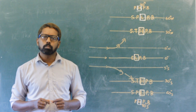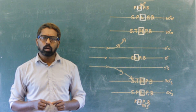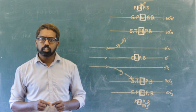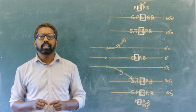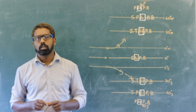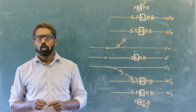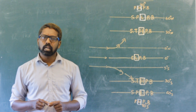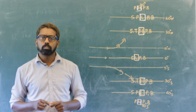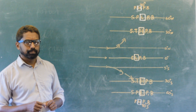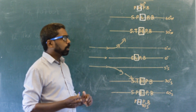The pressure belts shift northward during the period of the sun's northward progression.